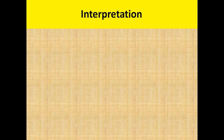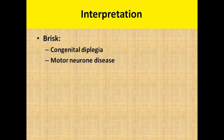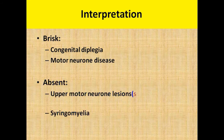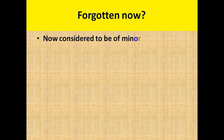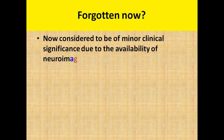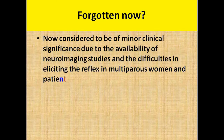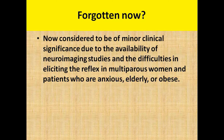It can be brisk in cases of congenital diplegia and motor neuron disease. It is usually absent in upper motor neuron lesions such as stroke, multiple sclerosis, and syringomyelia. However, nowadays this reflex is considered to be of minor clinical significance due to the use of various neuroimaging studies and the difficulty in eliciting this reflex in various patient groups.